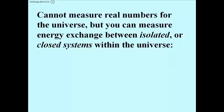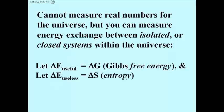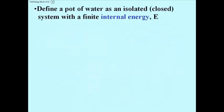We measure energy exchange in closed systems all the time. To do this, let's define a few terms. Let delta G represent the change in useful energy — this was first defined by a man named Gibbs, so G is the Gibbs free energy. And let delta S represent the change in useless energy, or the change in entropy. Now let's take a system that's easy to understand: a pot of water — an isolated, closed system.